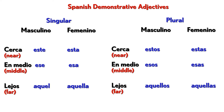Look at this chart. In here you will find the groups of both masculine and feminine forms of the demonstrative adjectives. You will notice that we have not two, but three groups in Spanish. The first group indicates something that's near you. The second group indicates something that is not so far, not so near, but in the middle. And the third group indicates things or people that are far away from you.